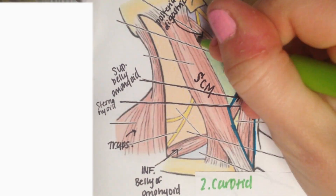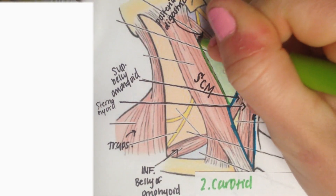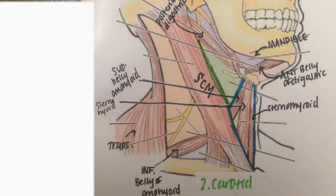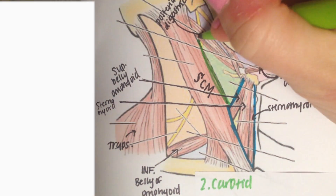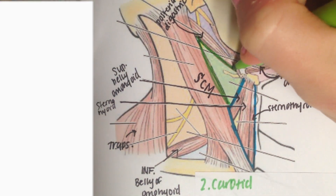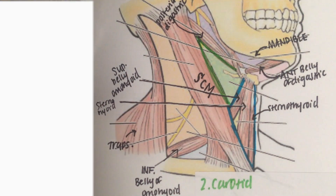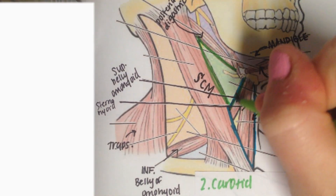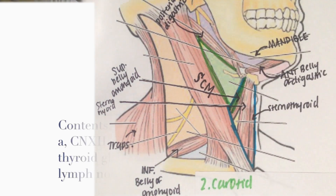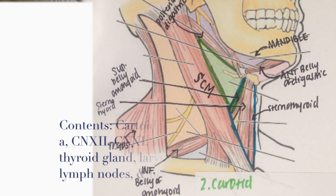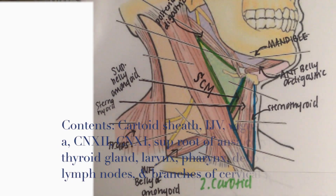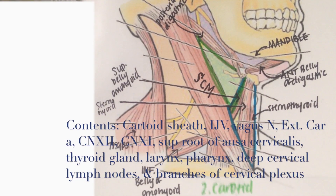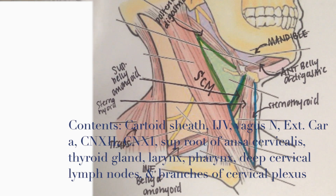Now we're going to talk about our carotid triangle. The borders are the sternocleidomastoid muscle, the posterior belly of the digastric, and the superior belly of the omohyoid, making up our carotid triangle. The carotid triangle contains a lot of structures — some of these would be the internal jugular vein, the vagus nerve, the external carotid artery, and spinal accessory cranial nerve 11, and many other things.